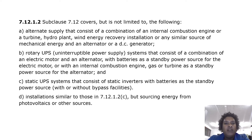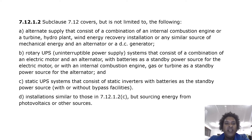Subclause 7.12 covers but is not limited to: alternative supplies consisting of a combination of internal combustion engine, turbine, hydro plant, wind or energy recovery installation, and an alternator or DC generator; rotary UPS systems consisting of an electric motor and alternator with batteries or an internal combustion engine as standby; static UPS systems consisting of static inverters with batteries, with or without bypass facilities; and installations sourcing energy from photovoltaics or other sources.